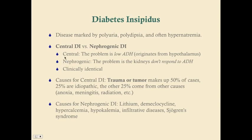Central and nephrogenic DI are clinically identical. Causes of central DI are most frequently head trauma or brain tumor, which may also present with anterior pituitary hormone deficiencies — signs of thyroid deficiency, adrenal insufficiency, or gonadal insufficiency. Approximately 25% of DI cases are idiopathic, tending to present in childhood; the other 25% come from other causes such as oxygen deficiency, meningitis, and radiation.